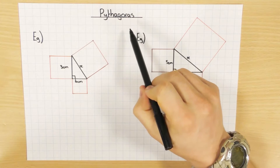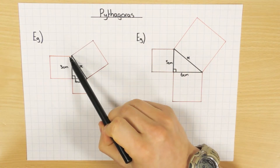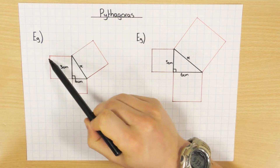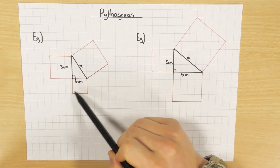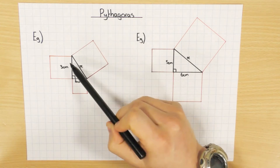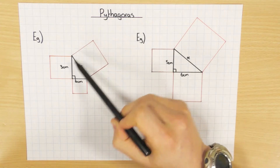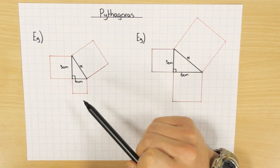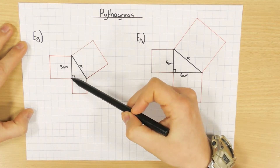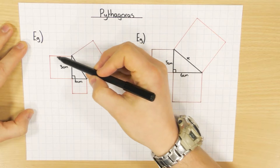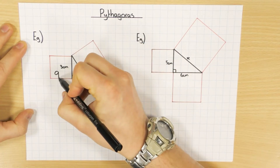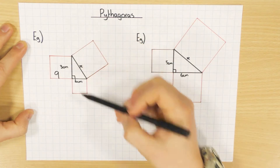In Pythagoras, what the actual theorem says is that if I add the area of the two smaller squares I get the area of the bigger square. If this length is 3 then the square would be 3 times 3, which is 9, so the area of this square would be 9.